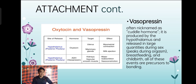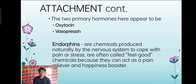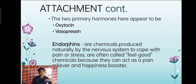There is a table in our slides that shows the site of release, the hormone, the target, and the effect. For oxytocin, the targets are the uterus and the mammary glands — including milk release during breastfeeding. We also have endorphins: chemicals produced naturally by the nervous system to cope with pain or stress, often called feel-good chemicals because they can act as a pain reliever and happiness booster.